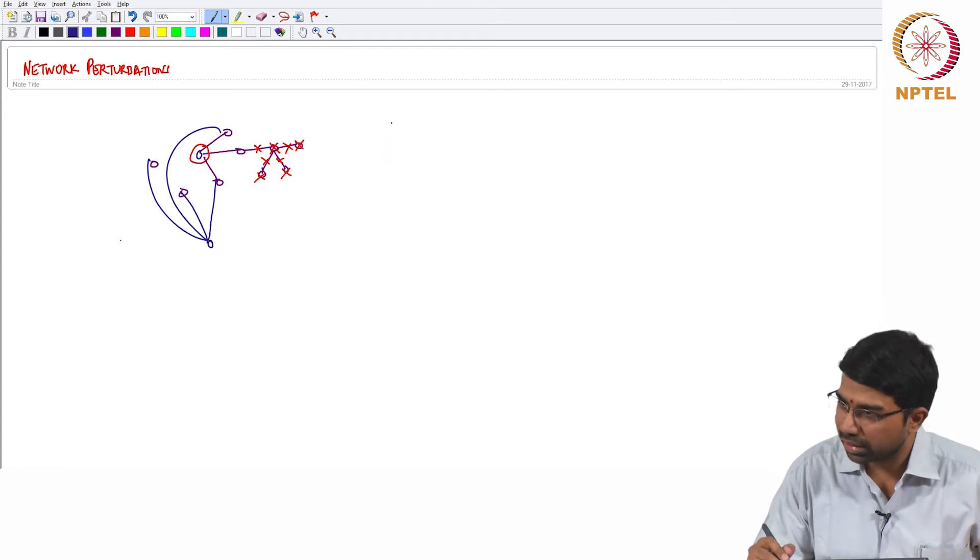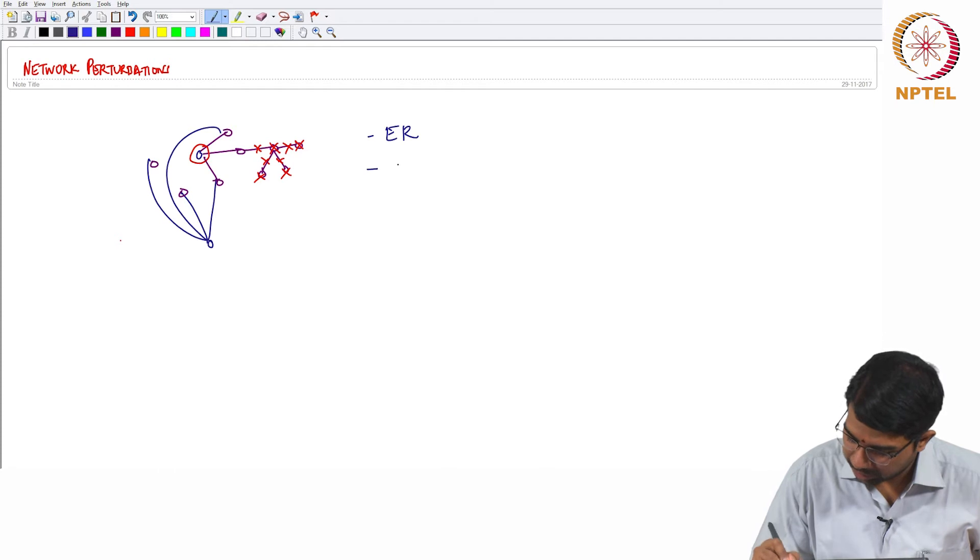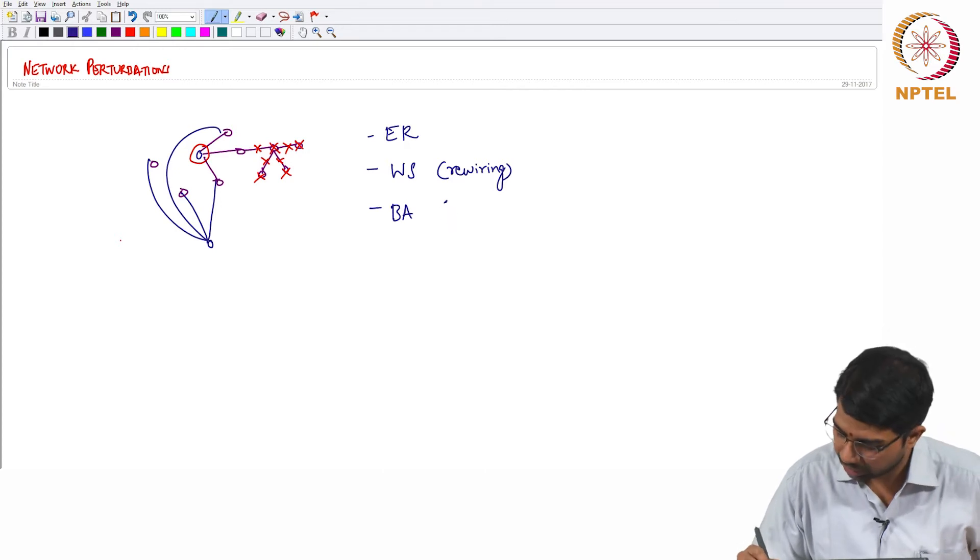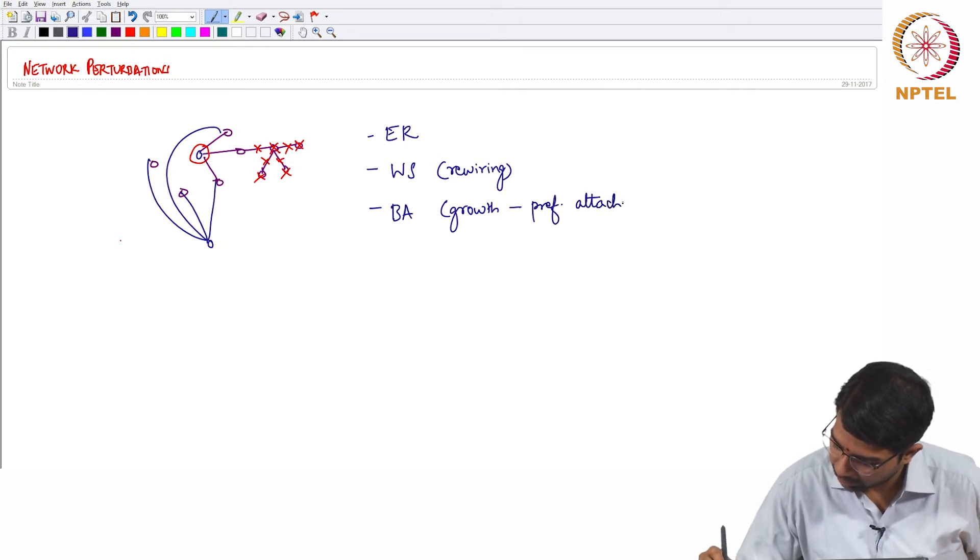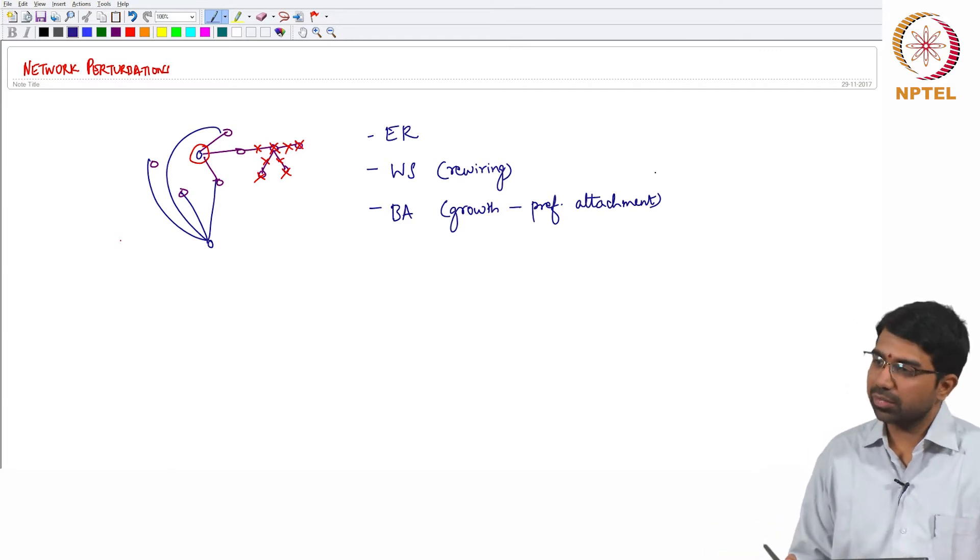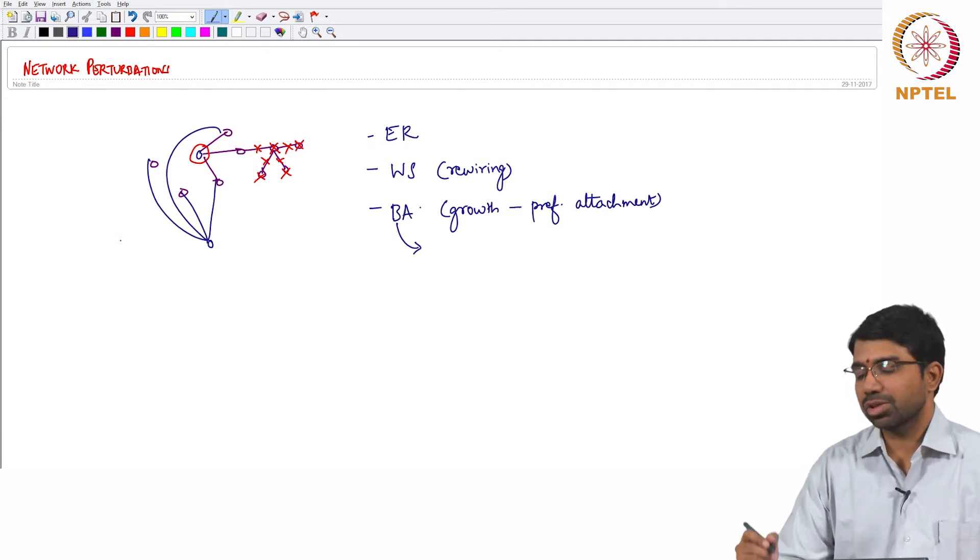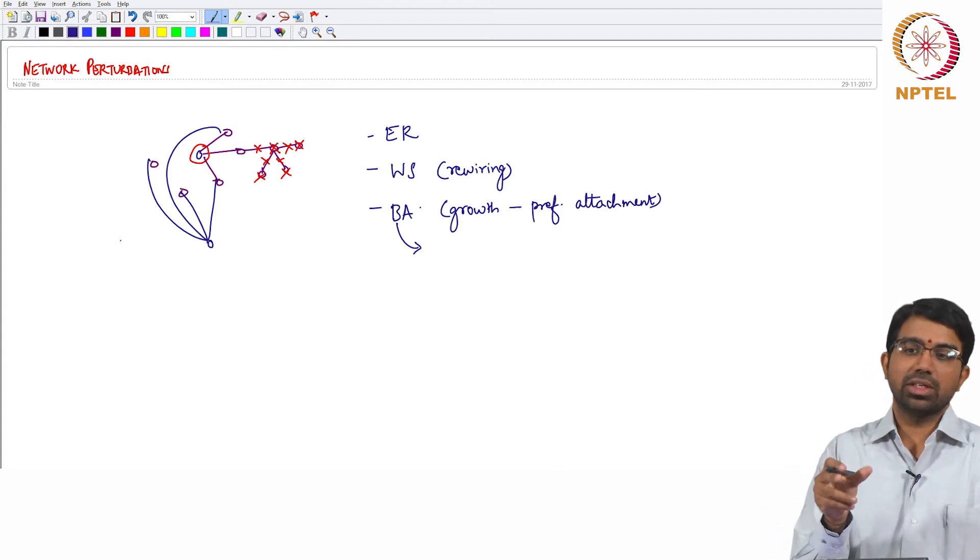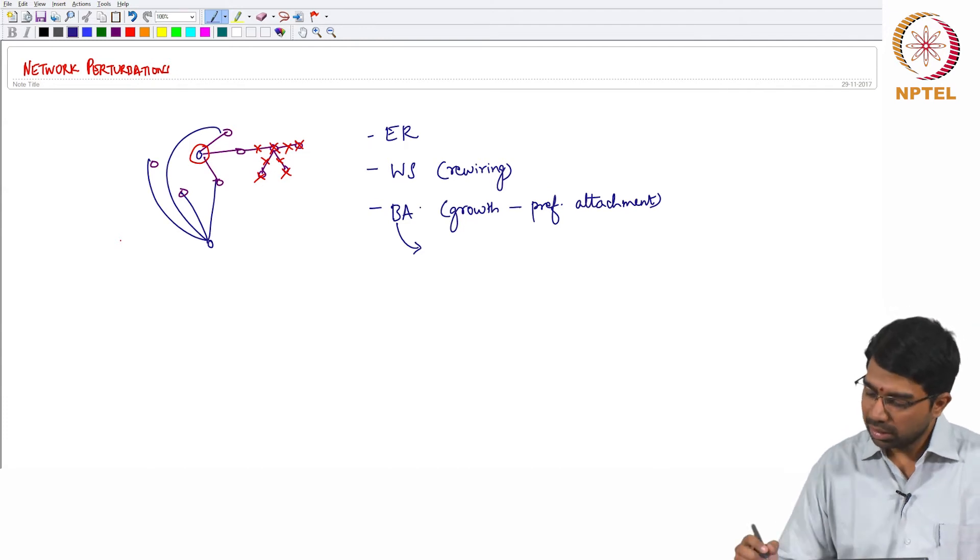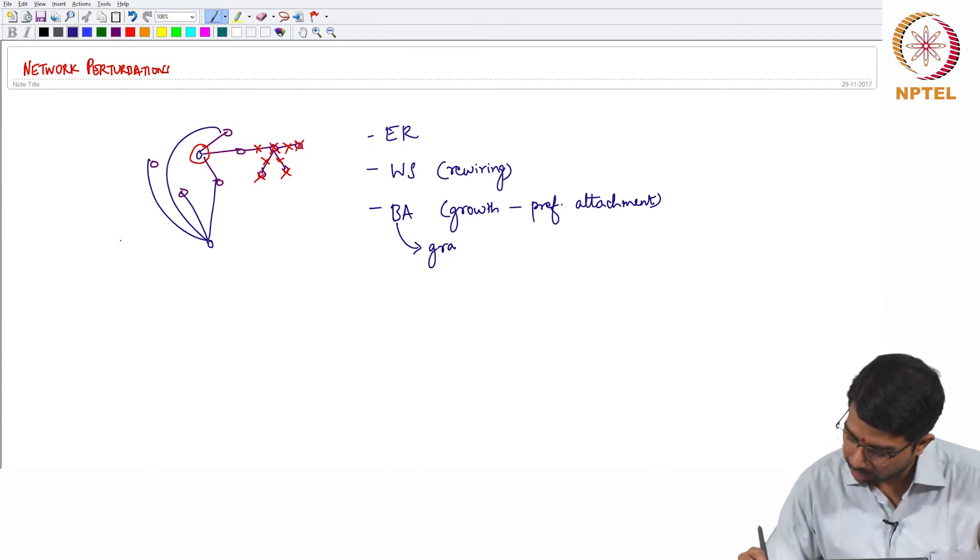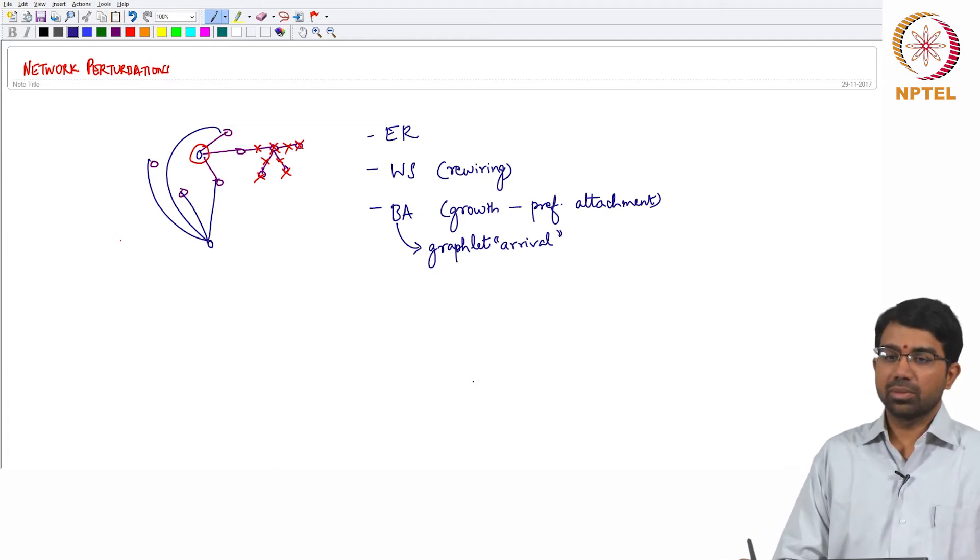So we studied a few ways of generating networks. We studied ER networks, then we studied WS networks which had some rewiring. Then we studied Barabasi-Albert networks which had growth by preferential attachment. There are other models that we have not studied. So even in Barabasi, the classic example that we looked at was what happens when you add one node at a time. You start with an initial network and keep adding one node at a time. But you may have what is known as a graphlet arrival. What is a graphlet? It is a subgraph.